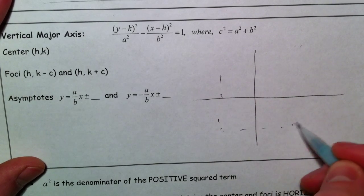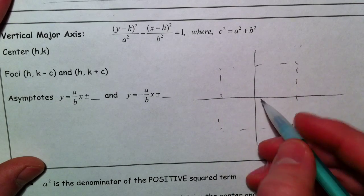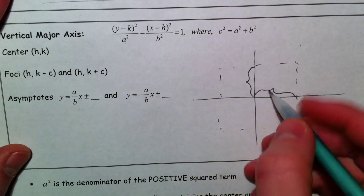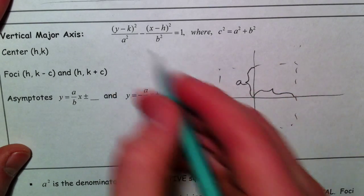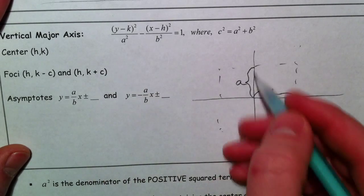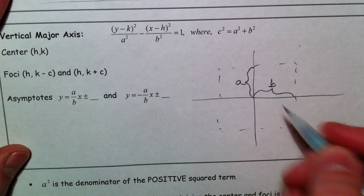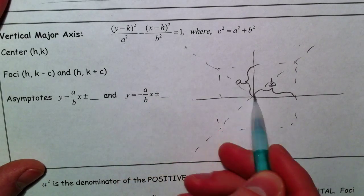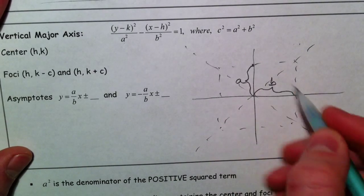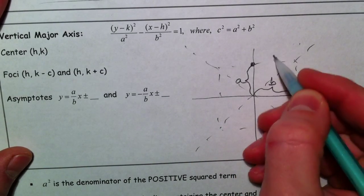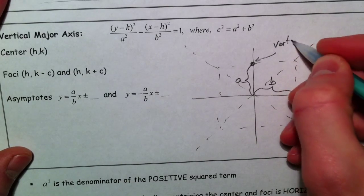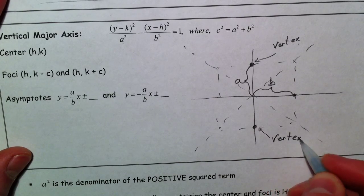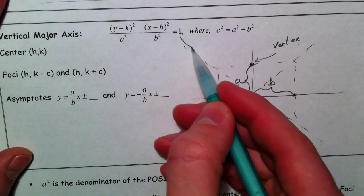I'm going to draw our rectangle. You draw the rectangle the same way, except in this case, a is underneath the y, so a is going to determine how far up and down we go, because it's underneath the y. Number underneath the y, up and down. Underneath the x, left and right. We have asymptotes again. So we draw our box, draw our asymptotes. And now these are our vertices. Vertex. Vertex. And now we open up and down.